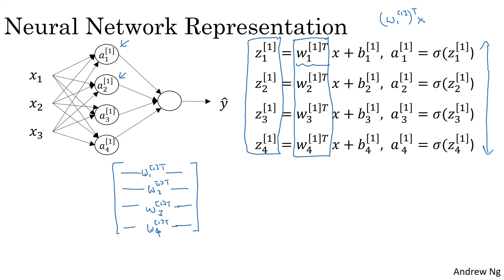So another way to think of this is that we have four logistic regression units there. And each of the logistic regression units has a corresponding parameter vector w. And by stacking those four vectors together, you end up with this 4 by 3 matrix.